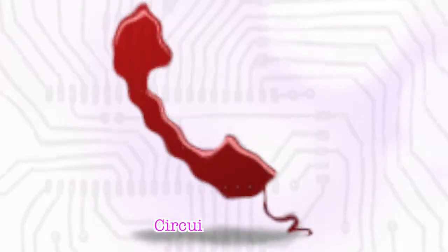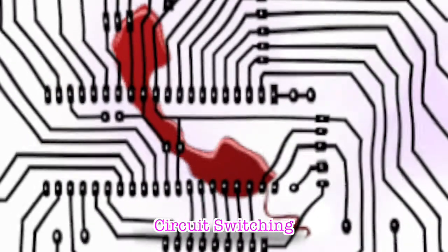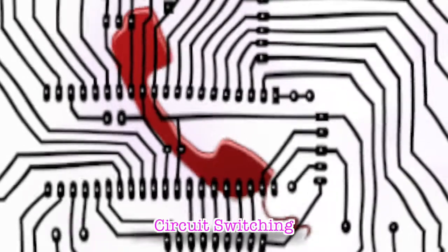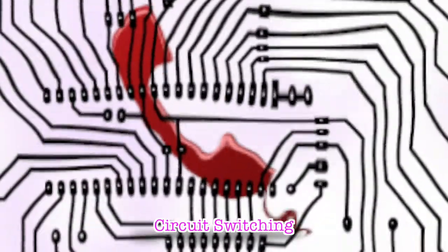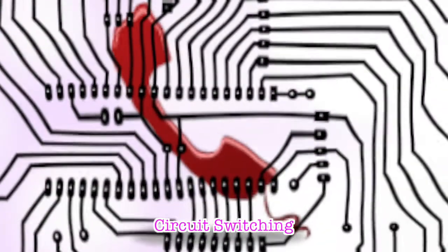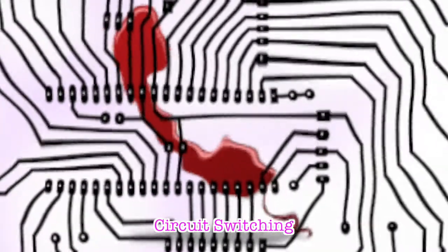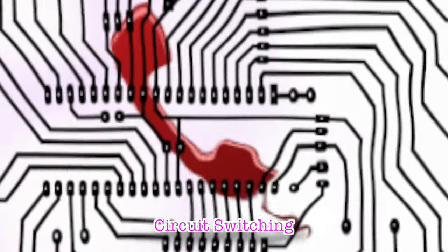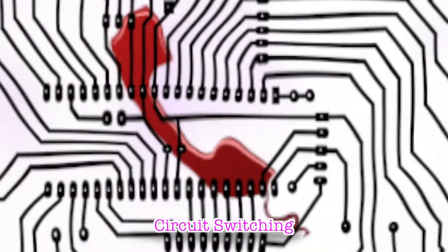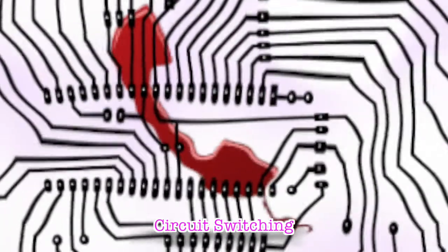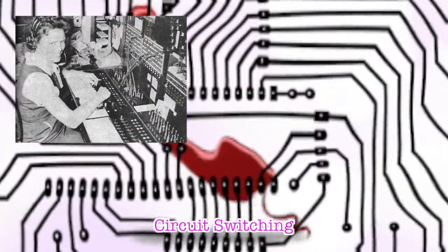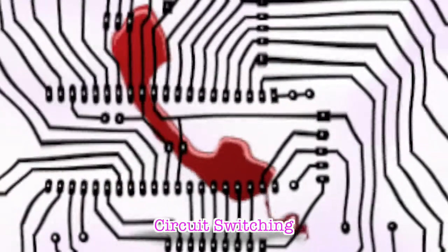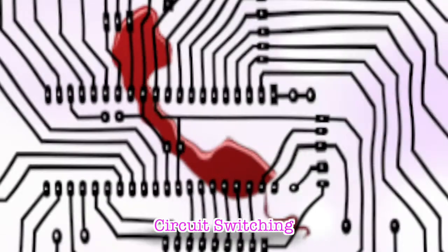If you ring a friend, your telephone opens a direct connection, or circuit, between your home and theirs. If you had a big map of the worldwide telephone system, you could theoretically mark a direct line all the way from your phone to the phone in your friend's house. As long as you're on the phone, the circuit stays permanently open between your two phones. This way of linking phones together is called circuit switching. In the old days, when you made a call, someone sitting at a switchboard pulled wires in and out to make temporary circuits that connected one home to another. Now the circuit switching is done automatically by an electronic telephone exchange.